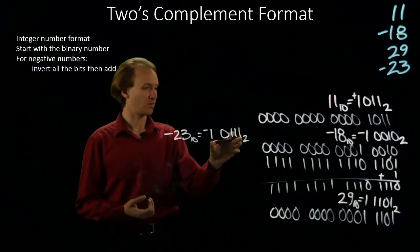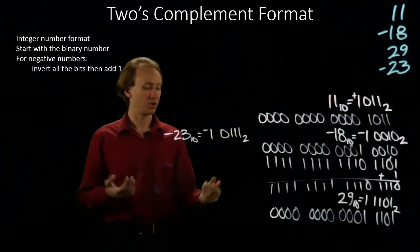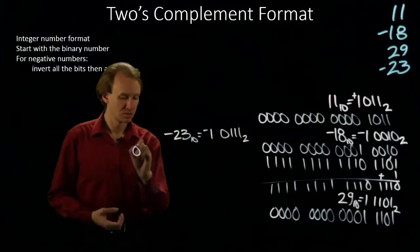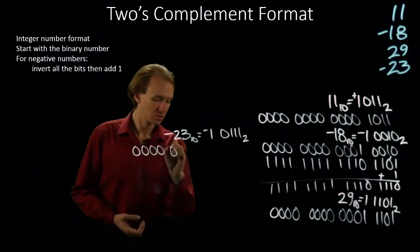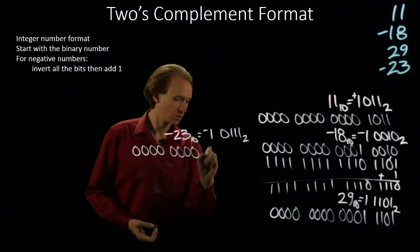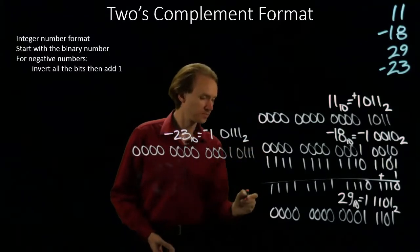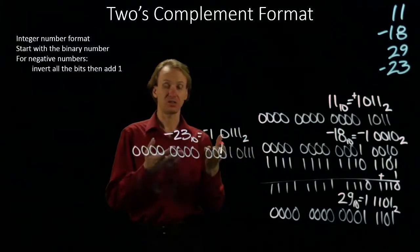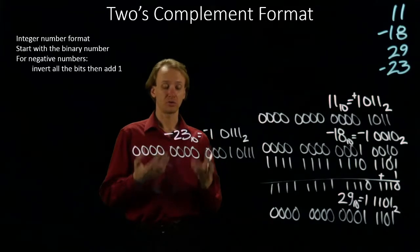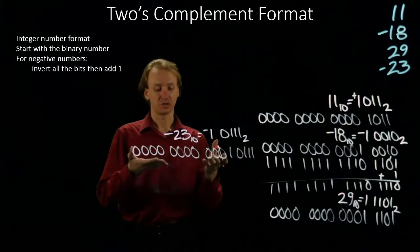Again, I'll start by writing 23 with 16 bits. But since I want a negative number, I'm going to apply the two's complement operation to this number. That will give me the complement of 23.